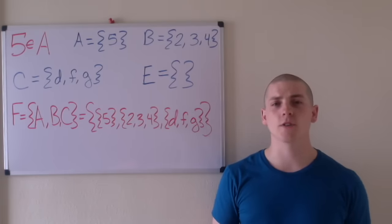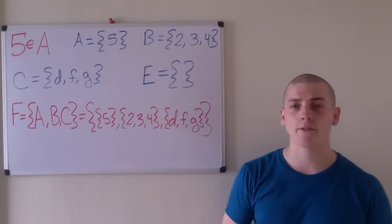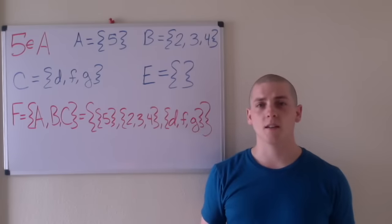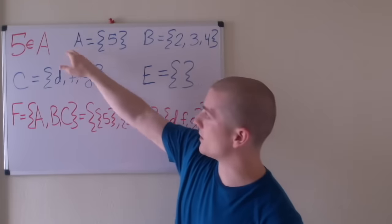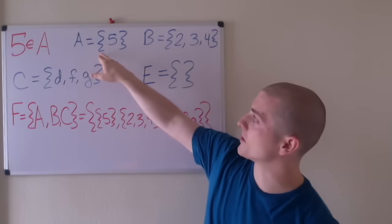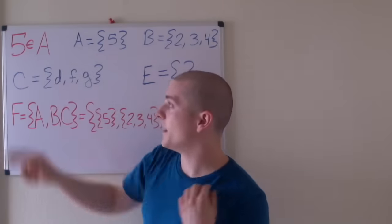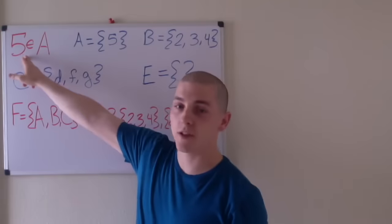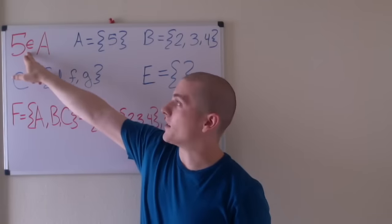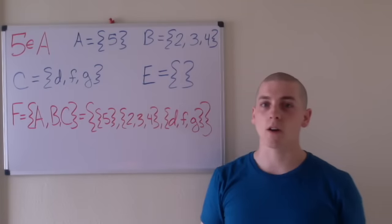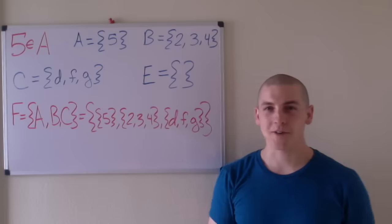Sets are usually denoted by capital letters, such as capital A, capital B, C, E, or F. And we say that the set contains elements. For example, we could say that the set A equals the set containing the element 5, or we can say that 5 is an element of A. I will be introducing a lot of symbols like this — this just means 'is an element of' — and it will save us a lot of time in future videos.